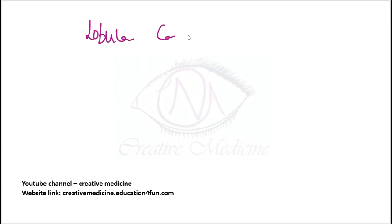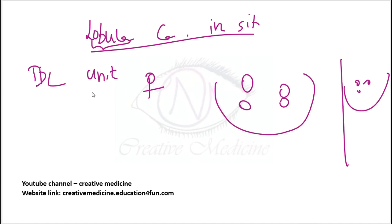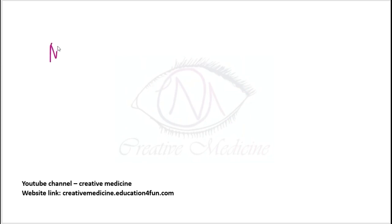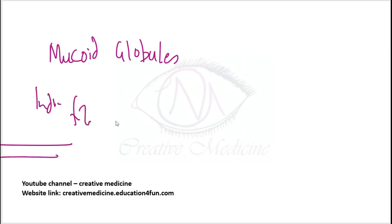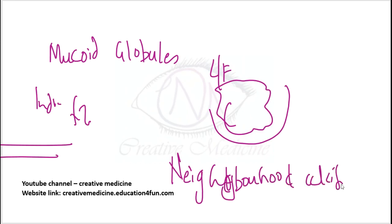Lobular carcinoma in situ originates from the terminal ductal lobular units and is seen only in females. It is multicentric and bilateral, making it a marker for increased risk of bilateral breast carcinoma. On cytopathology, cytoplasmic mucoid globules and Indian file pattern are seen, which is the hallmark. Neighborhood calcification is characteristic on imaging. Treatment is tamoxifen and raloxifene.